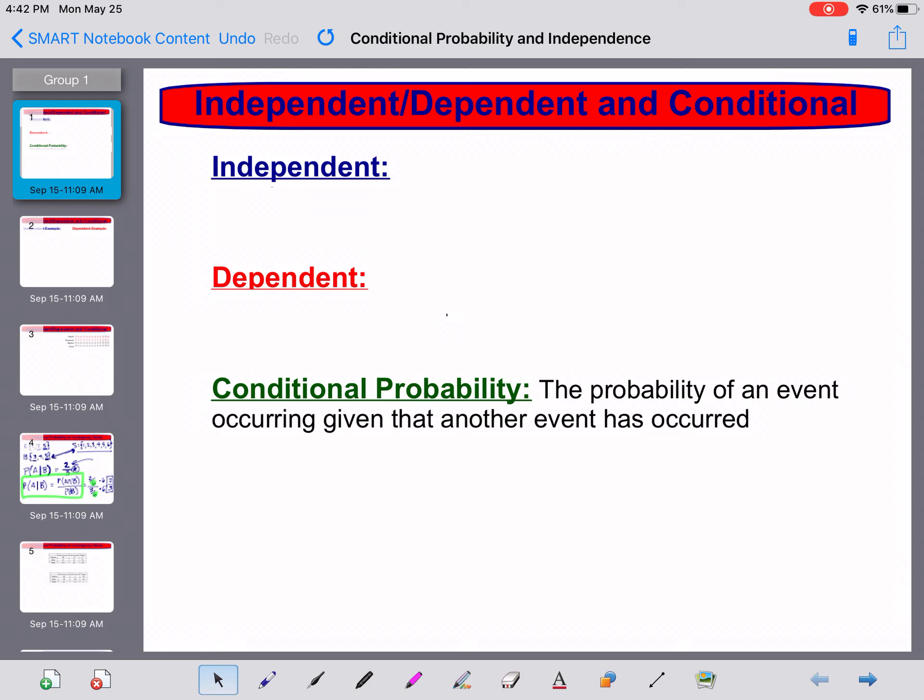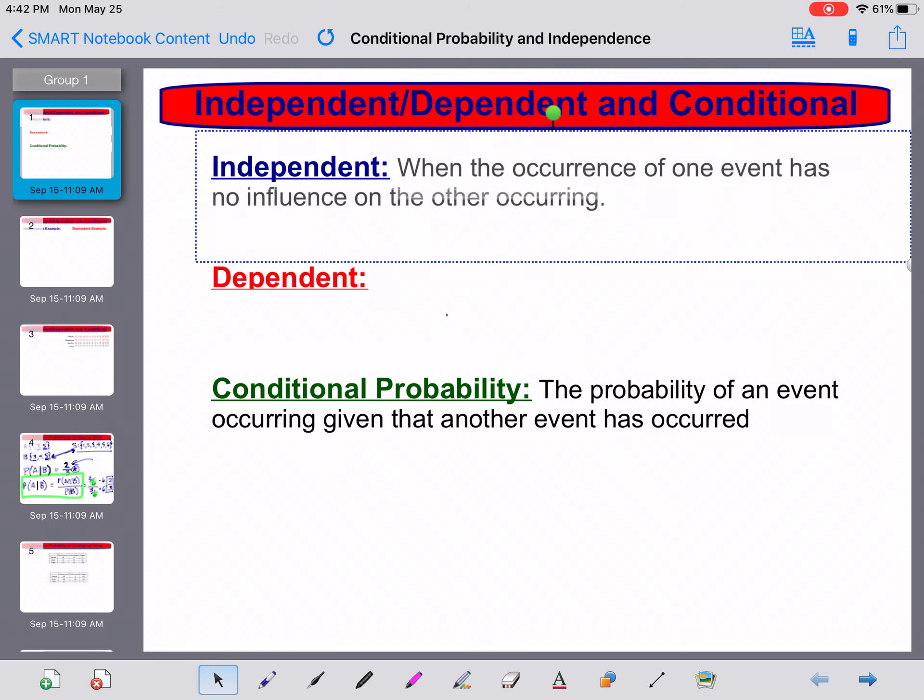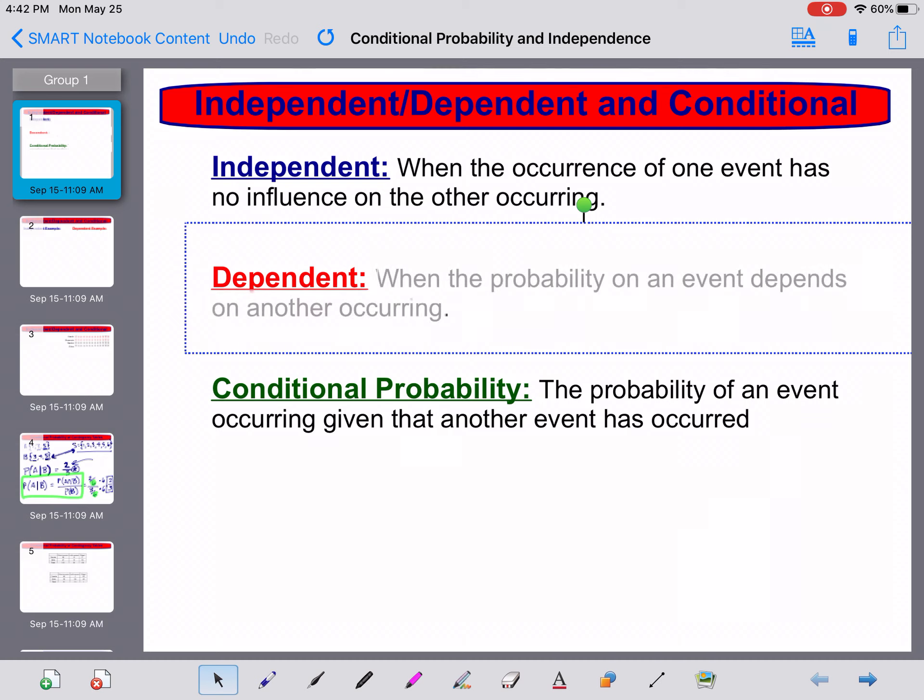Independent and dependent as far as probability goes. Independent is where one event has no influence on the other, and that can mean a few different things. We can have some assumptions that make sense, or we can prove these mathematically. We're going to show you both of those. If independent means it doesn't have influence, then dependent would be that they do influence each other. So one event depends on another occurring or if it changes in that sense.